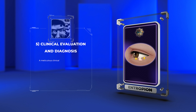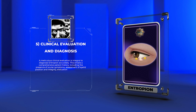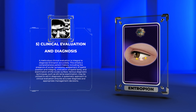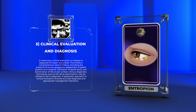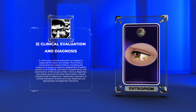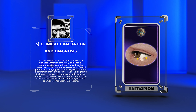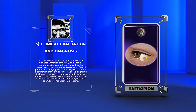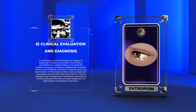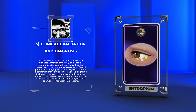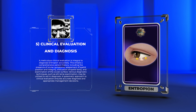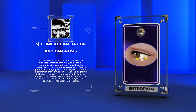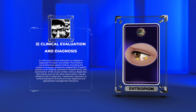A meticulous clinical evaluation is integral to diagnose entropion accurately. This entails a comprehensive patient history, including the presence of ocular symptoms, assessment of eyelid position and integrity, evaluation of eyelid laxity, and examination of the ocular surface. Various diagnostic techniques, such as slit lamp examination, may be utilized to aid in diagnosis.